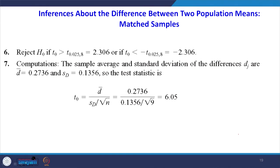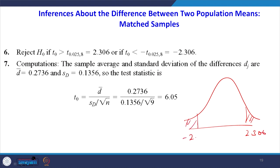When alpha is 0.025 (half of 5%) and degrees of freedom is 8, the critical value from the table is 2.306. So the rejection region is t greater than 2.306 or t less than minus 2.306. The mean of the differences is 0.2736 and the standard deviation is 0.1356. Substituting these values, the calculated t value is 6.05, which is far outside the critical region, so we reject the null hypothesis.